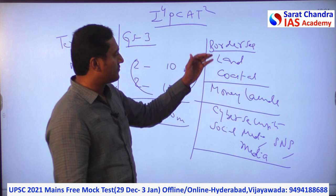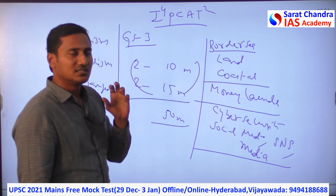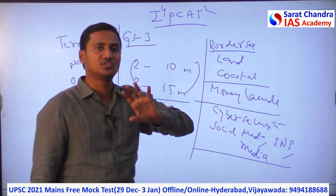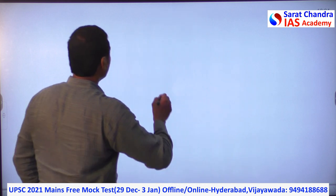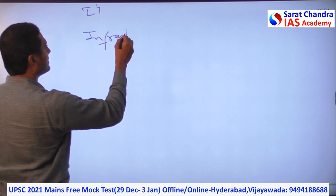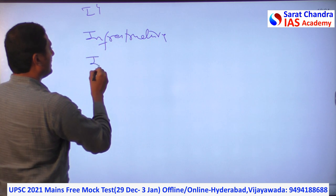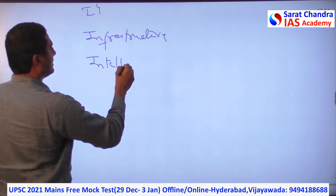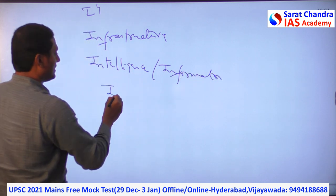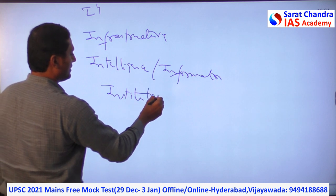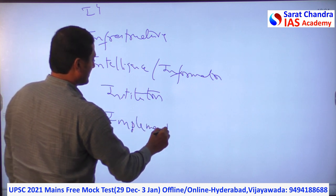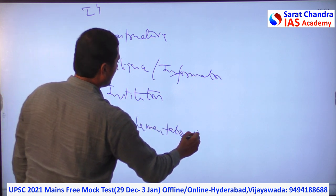So let the topic come from any of these — still you can use these 9 points. I would be giving you one example from each point also. I4 in the sense: infrastructure, intelligence or information, institutions, and implementation of laws.